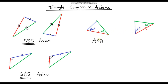So if we are given two triangles with one side length the same and the two angles either side of that side length are the same, then we have two triangles that are congruent. This is called the ASA axiom — angle side angle.